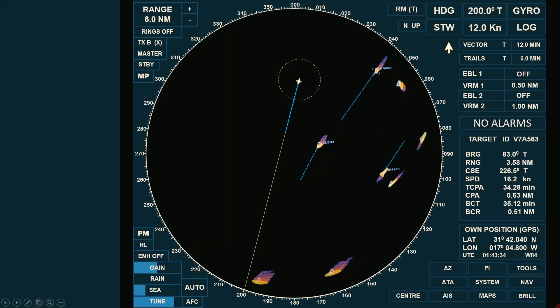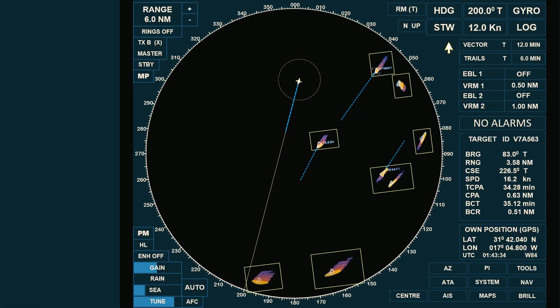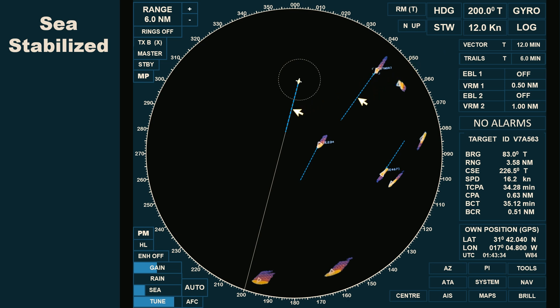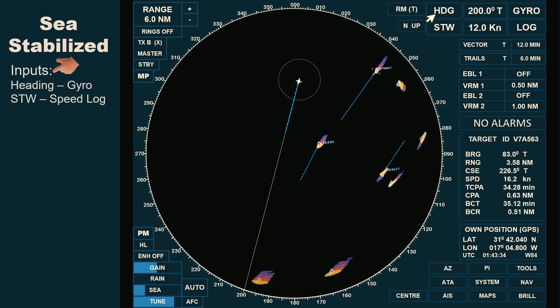Looking at the radar screen, you'll notice multiple moving targets. Since we'll be using the radar for collision avoidance, it should be set to sea stabilized mode. If you're not familiar with the difference between ground and sea stabilized modes, I've made a separate video on this topic — kindly check the link in the description for more details. The dashed lines you see on the radar display for both own ship and acquired targets are called vectors. This radar is set to sea stabilized mode, and the ship's heading input comes from the gyro, showing 200 degrees true.